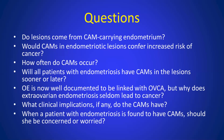Given this, naturally there will be questions: should we get concerned? Because it's a benign disease, but all of a sudden it has cancer driver mutations. Do lesions come from the eutopic endometrium carrying the mutations? Would CAMs in endometriotic lesions confer increased risk of cancer? How often do CAMs occur? Will all patients with endometriosis have CAMs sooner or later? And ovarian endometriosis is well documented to be linked with ovarian cancer — but why do ovarian endometriotic lesions seldom lead to cancer?